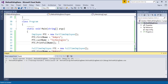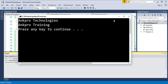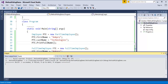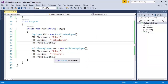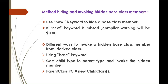When I run this program, it will just call ANKPRO Technologies and ANKPRO Training. PartTimeEmployee and FullTimeEmployee are the two child classes, and we just learned the three different ways to invoke the hidden base class member from a derived class: using the base keyword, casting the child type to parent type, and using a parent class reference variable. Thank you, have a nice day! Please subscribe to ANKPRO Training.